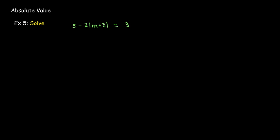In our last example here, we're going to have to do a little bit more work. And the reason is that we don't have the absolute value part by itself. It's multiplied by negative 2, and then you have a 5 added on to that.